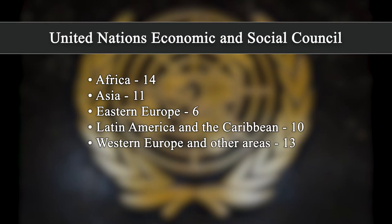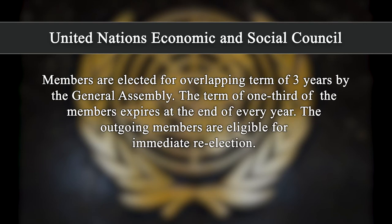The membership of the ECOSOC is based on geographical representation of its members. The region-wise allocation of seats is: Africa 14 seats, Asia 11 seats, Eastern Europe 6 seats, Latin America and the Caribbean 10 seats, and Western Europe and other areas 13 seats. Members are elected for overlapping terms of 3 years by the General Assembly, and the term of one-third of the members expires at the end of every year. Outgoing members are eligible for immediate re-election.